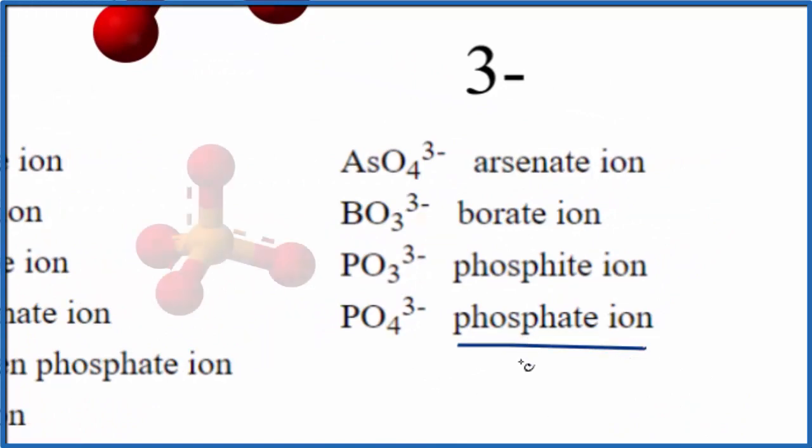That three minus is on the whole ion, it's spread out on the entire ion. So the chemical formula for the phosphate ion is PO4 3-. I recommend you memorize these common polyatomic ions, they come up quite often in chemistry.